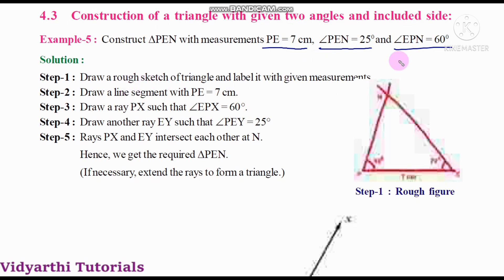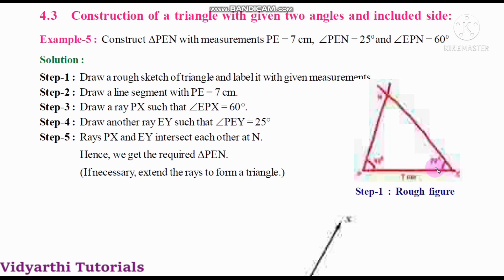Let us see how they have done here. Step 1: Draw a rough sketch of the triangle and label it with the given measurements. When we draw a rough figure, we will label the measurements. Here we have a triangle name.